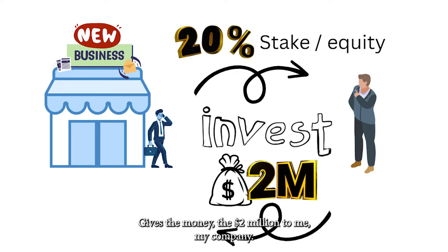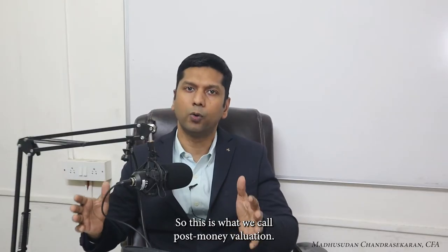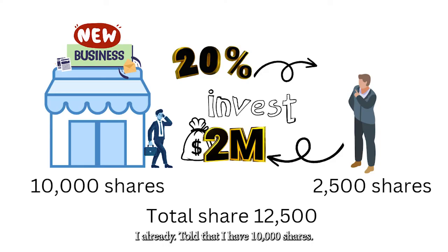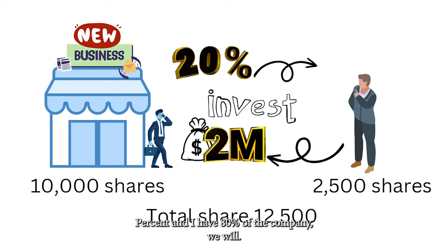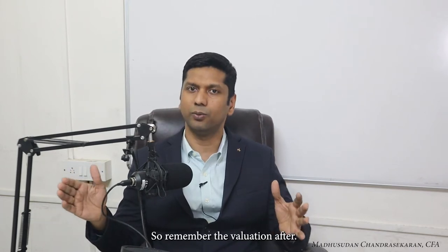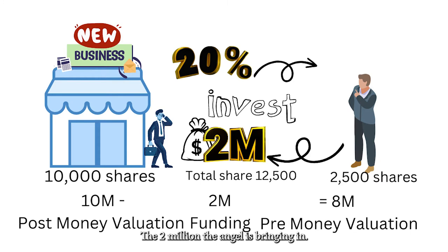After the angel gives me the two million dollars, my company is going to be valued at ten million — this is what we call post-money valuation. I already have 10,000 shares; we don't give away existing shares. Instead, we issue 2,500 new shares so the angel has 20% and I retain 80%. The pre-money valuation — prior to this transaction — is ten million minus the two million coming in, so eight million dollars.